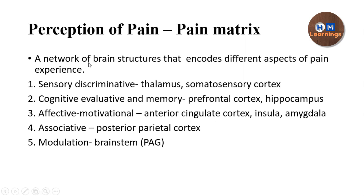Pain matrix theory explains that there is a network of brain structures that encodes the different aspects of the pain experience. There are different areas of the brain that need to be activated for encoding these different aspects. These are groups of neurons connected with each other, and information flows between these circuits, analyzing the different aspects of pain so that the person experiences pain as a whole.